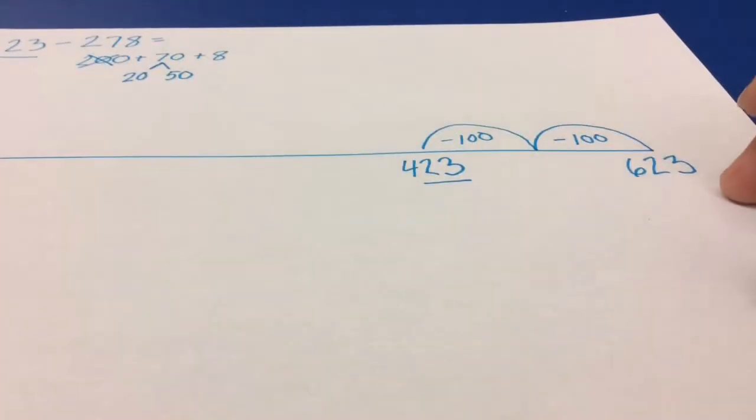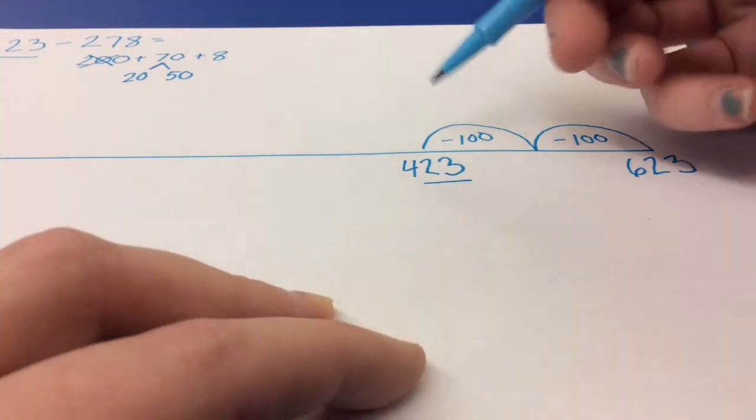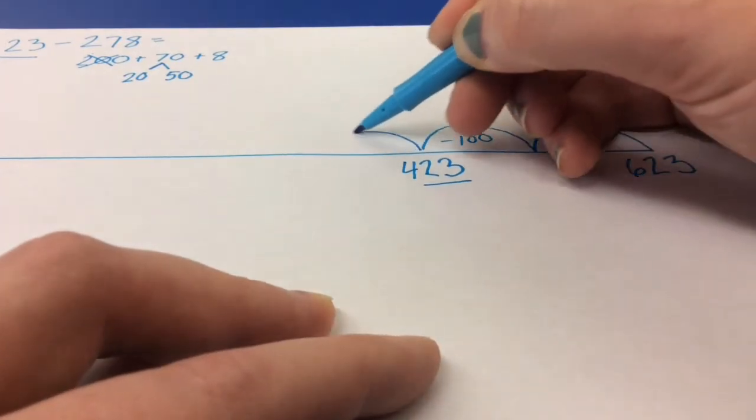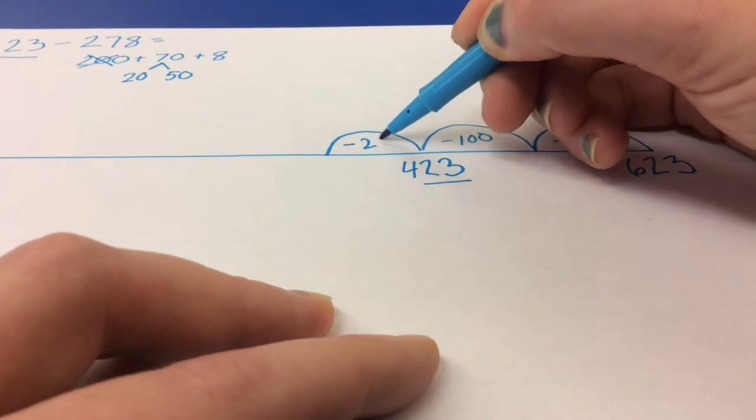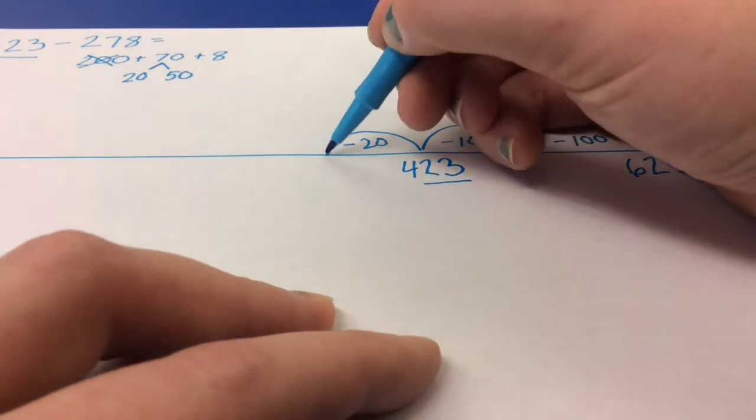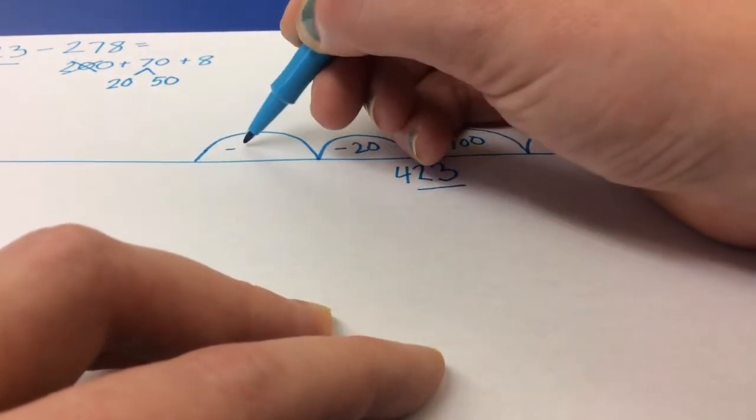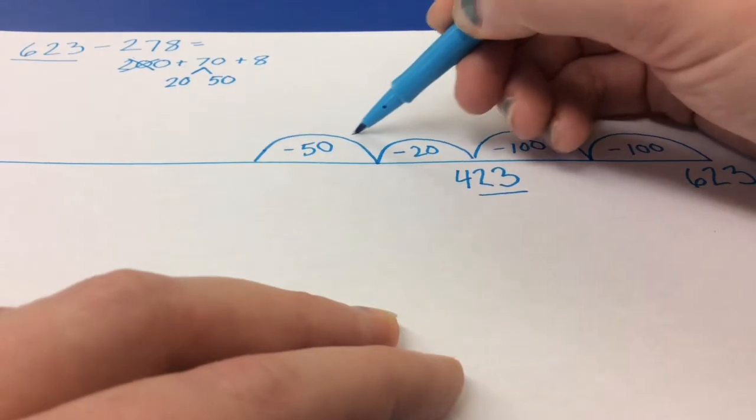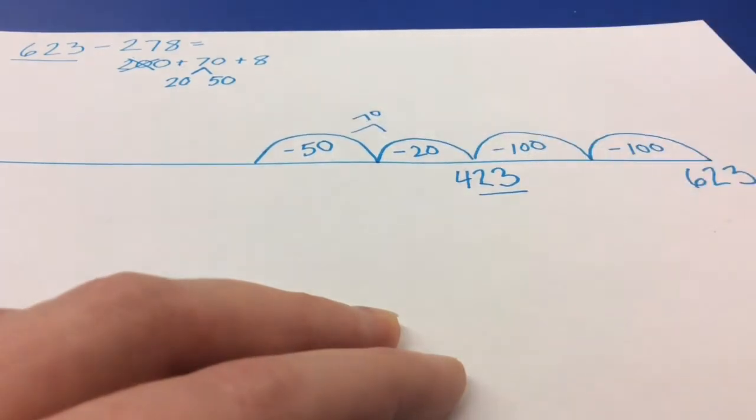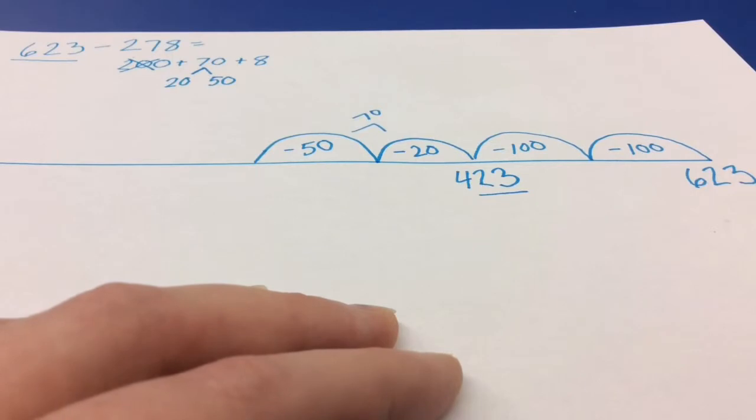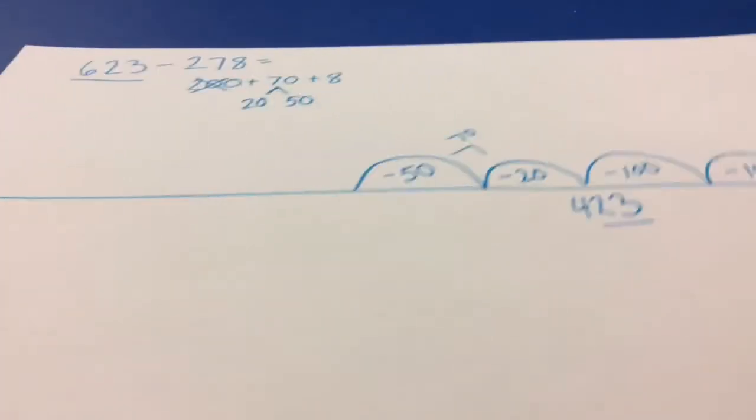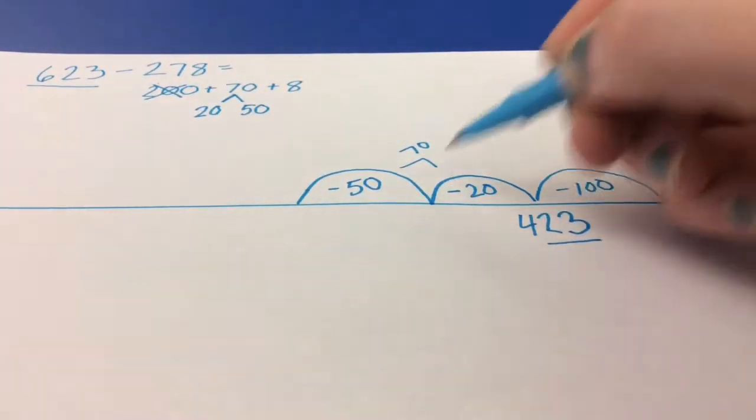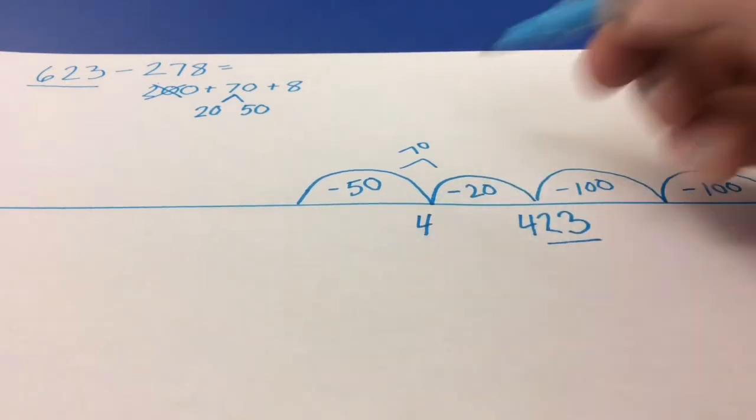And that's going to make my subtraction a lot easier. So if I take 423, and first I take away 20, and then I take away 50, I'm still taking away 70. These two both equal 70, but it's a lot easier to do in my head. So 423, take away 20, is 403.